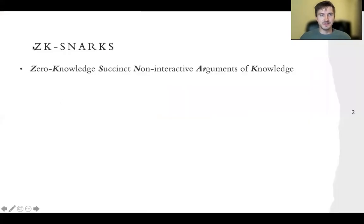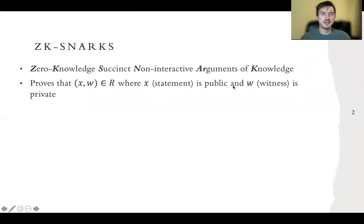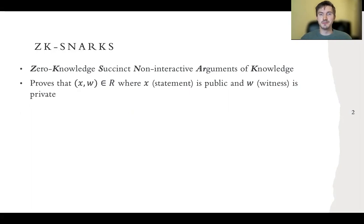Let me start by reminding you what SNARKs are. This stands for Zero Knowledge Succinct Non-Interactive Argument of Knowledge. The idea is that we want to prove that some statement x, which is public, and some witness w, which is private, satisfy a certain relation.